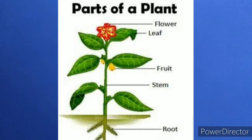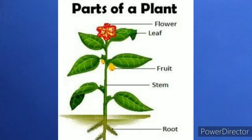These are particular parts. Just as we have eyes, nose, mouth, ears, head, and hands — these are our body parts. Like that, plants also have their own parts.